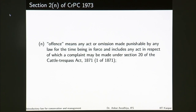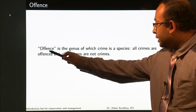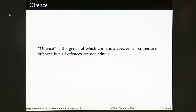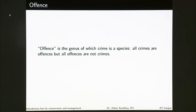We have seen before that crimes are not defined under any act, but offense is defined under the CRPC. Offense is the genus of which crime is a species — offense is a much bigger set than crime, and all crimes are offenses but all offenses are not crimes. All crimes are acts of commission or omission made punishable under law, but not all offenses are crimes because a crime requires both Actus Reus and Mens Rea.